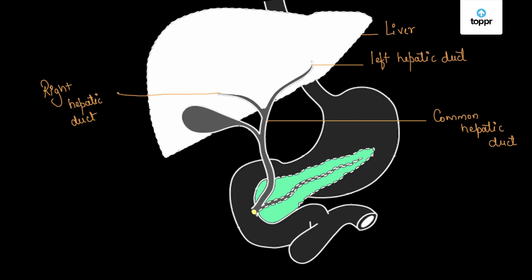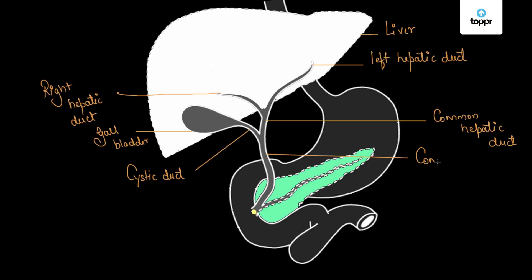Moving forward, there is an organ present just at the right lobe of the liver called the gall bladder. The gall bladder gives out a duct called the cystic duct. The cystic duct and the common hepatic duct combine to form a single duct called the common bile duct.